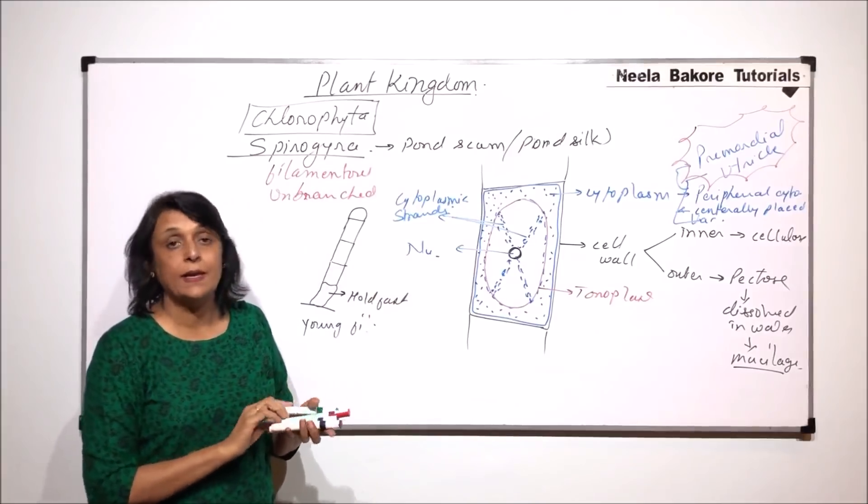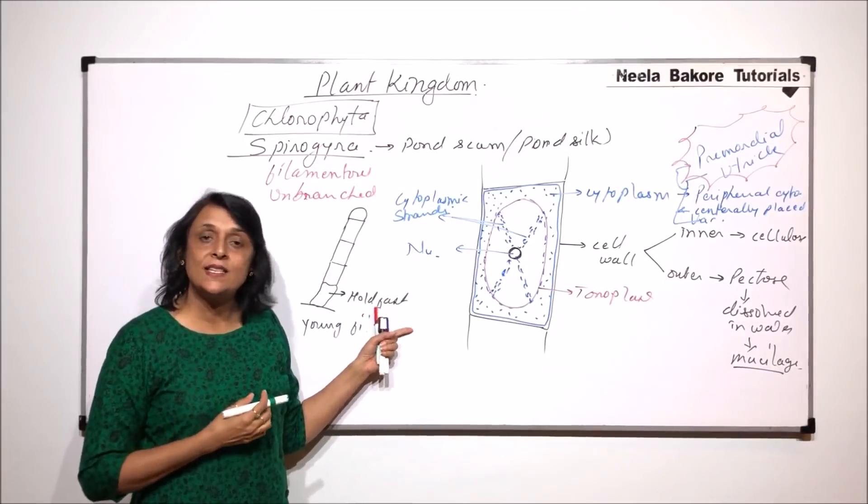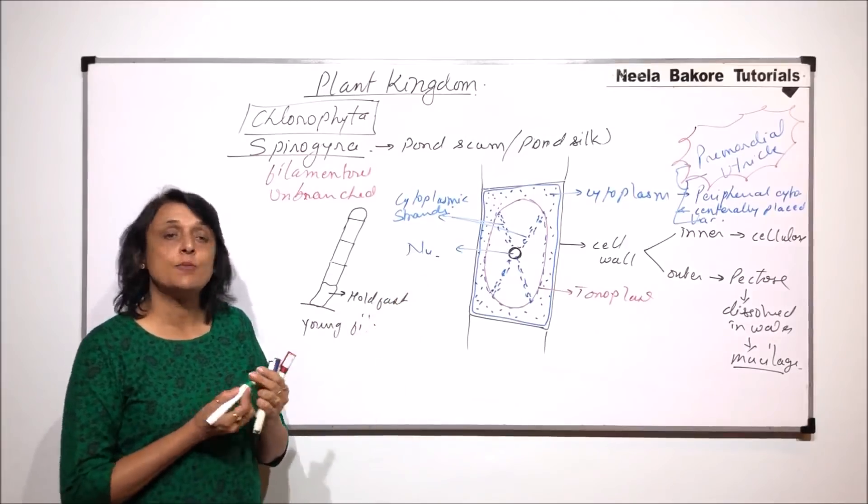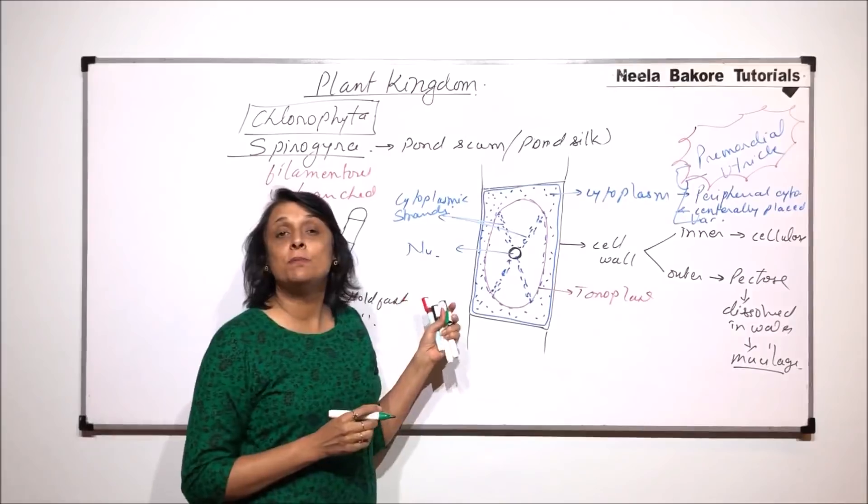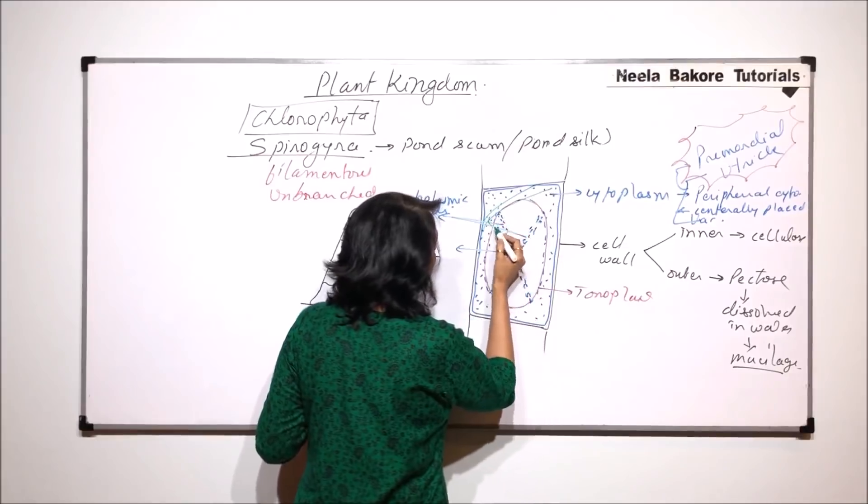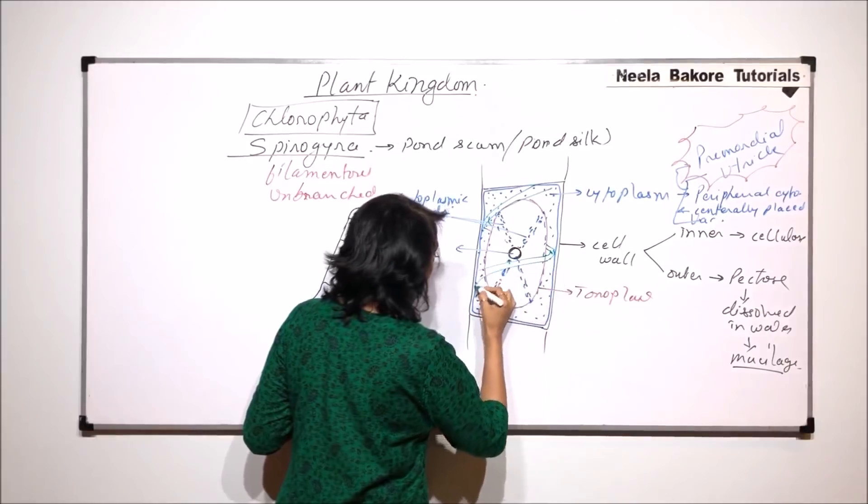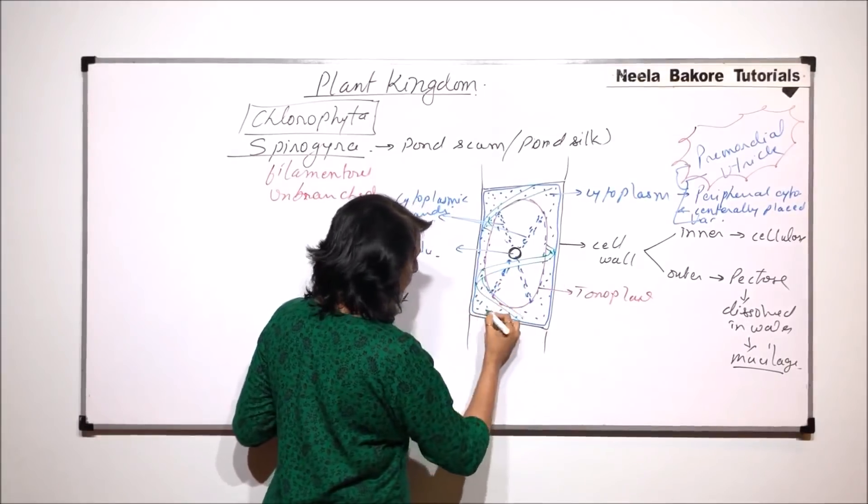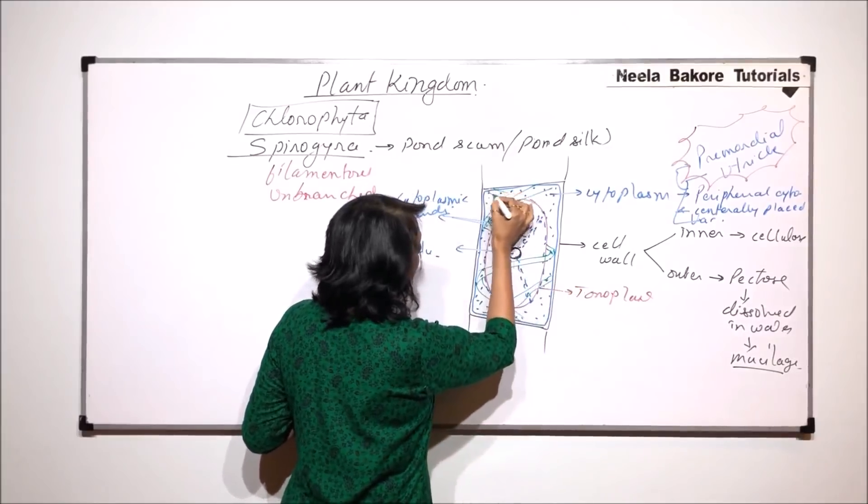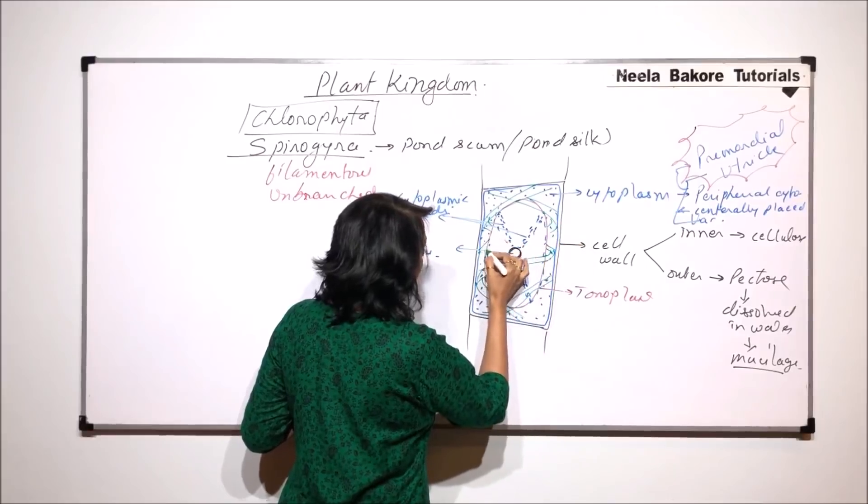It is green alga, so it has to have those green pigments and accessory pigments present in chloroplasts. Chloroplasts in case of Spirogyra are ribbon-like and are spirally arranged. We are drawing this spirally arranged - this one goes behind the vacuole and this one is going above it. This is the chloroplast here and it is a ribbon-like spirally coil.